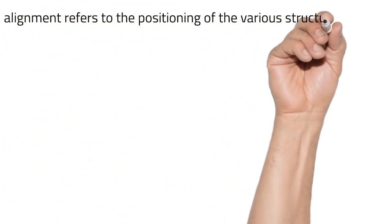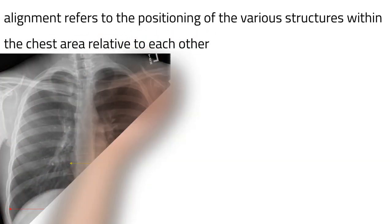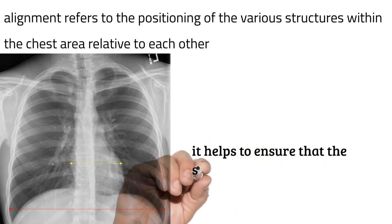In a chest x-ray, alignment refers to the positioning of the various structures within the chest area relative to each other. Proper alignment is important for accurate interpretation.